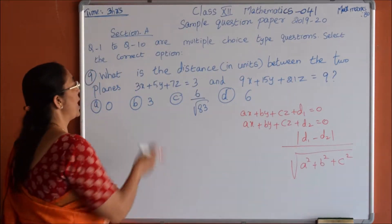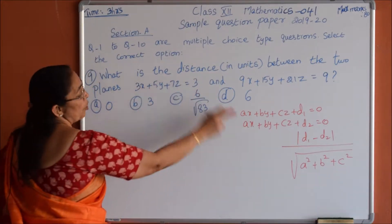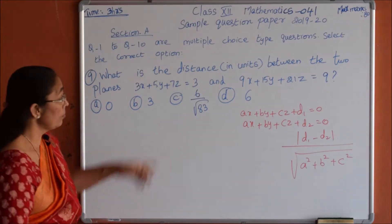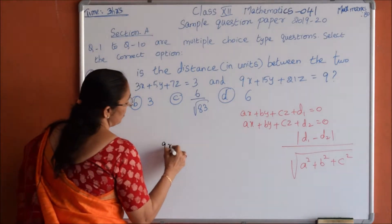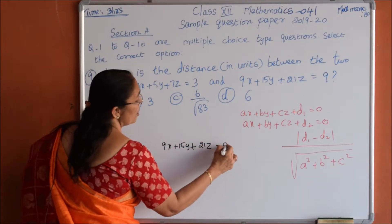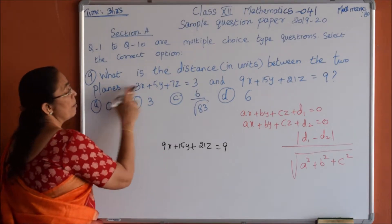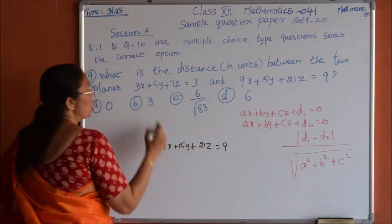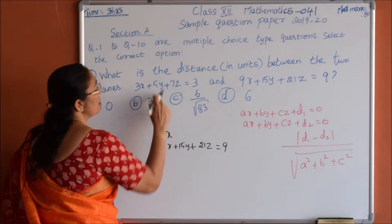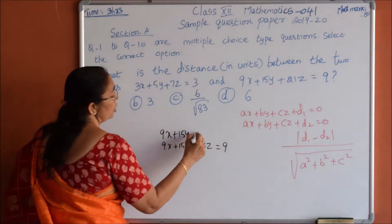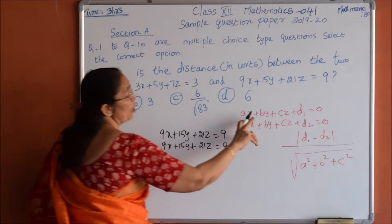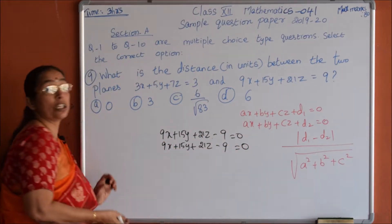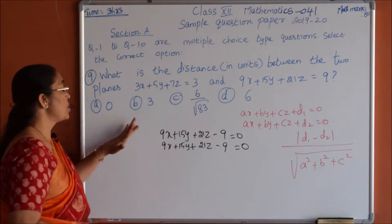First we arrange the two plane equations so their direction cosines are the same. The second equation is 9x plus 15y plus 21z equals 9. By multiplying the first equation by 3, we get 9x plus 15y plus 21z equals 9 — that is, 3×3=9x, 3×5=15y, 3×7=21z equals 9. Arranging in the form Ax plus By plus Cz plus D1 equals 0 gives minus 9 equals 0 for both, so D1 and D2 are equal.